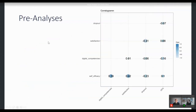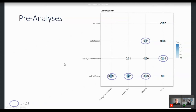Here you can see the zero-order bivariate correlations, with highlighted ones revealing significance. This is all based on pandemic data, and we can say that we were able to partially replicate the findings and bivariate associations that were known before based on pre-pandemic data.